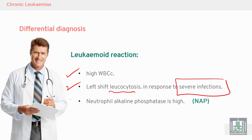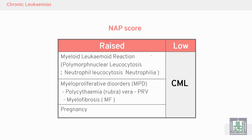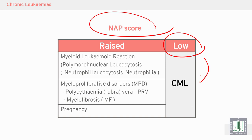Neutrophil alkaline phosphatase (NAP) is very high in leukemoid reaction. We have a very important lab test called Neutrophil alkaline phosphatase — we do a score. If we find the score low, the diagnosis will be chronic myeloid leukemia. But if we find the score high, it is myeloid leukemoid reaction.